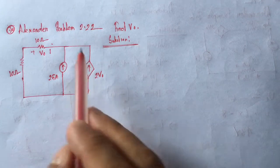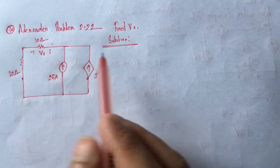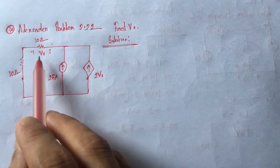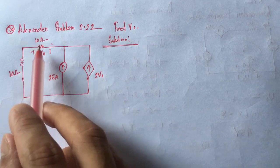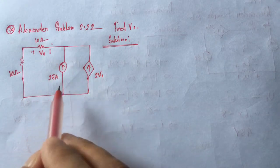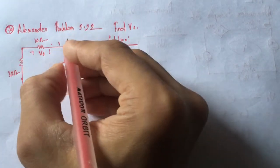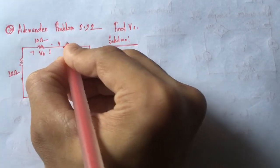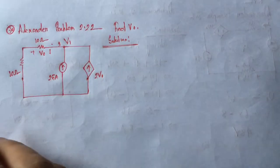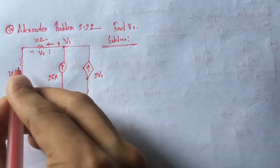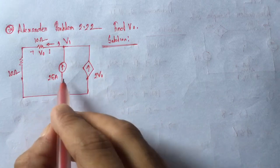Hi viewers, today we will solve problem 2.2 from Alexander. We will find the voltage V0 for the circuit, and the voltage V0 is across the 10 ohm resistance in the circuit. Let this be point 0.1, and the voltage at this point be V1. Let this current be flowing downward through this 20 ohm resistance.